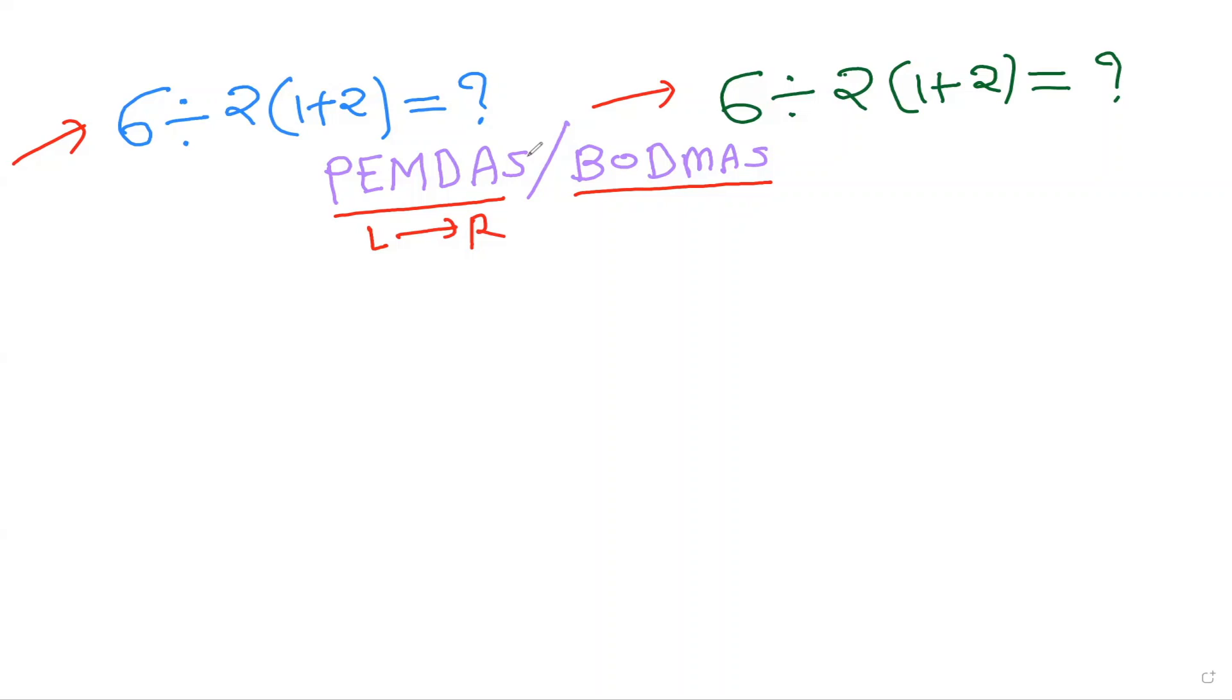Why are there two different possible answers? If I do the first thing here, I can see there is a bracket, so first I go to operate on the bracket. There is no controversy for the first step, so I can do: six divided by two, and then one plus two is going to be three.